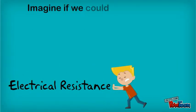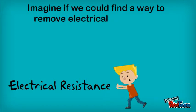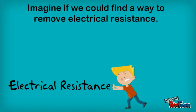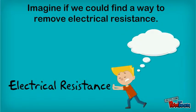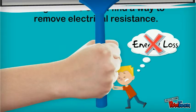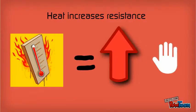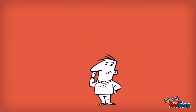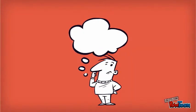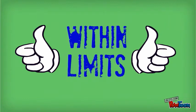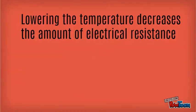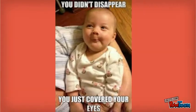Imagine if we could find a way to remove electrical resistance, thereby eliminating energy loss. We know that heat increases resistance, and cranking down the thermostat ought to decrease it, right? It does, within limits. In normal conductors, resistance falls as the temperature drops, but it never completely disappears.